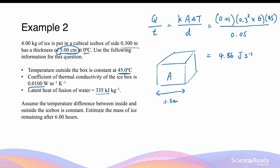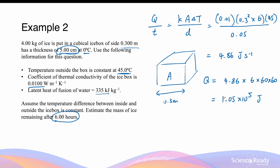Now we want to know how much total heat is transferred after six hours. Q is equal to 4.86 times the time in seconds: 6 hours times 60 times 60 gives approximately 1.05 times 10 to the power of 5 joules over six hours. Now that we've calculated the total heat transferred, we can use the latent heat of fusion to calculate how many kilograms of ice have been melted into water as a result of this heat.